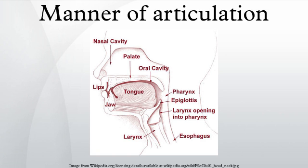Fricative, sometimes called spirant: where there is continuous frication at the place of articulation. Examples include English /f, s/, /v, z/, etc. Most languages have fricatives, though many have only one. However, the indigenous Australian languages are almost completely devoid of fricatives of any kind. Sibilants are a type of fricative where the airflow is guided by a groove in the tongue toward the teeth, creating a high-pitched and very distinctive sound. These are by far the most common fricatives. Fricatives at coronal places of articulation are usually, though not always, sibilants. English sibilants include /s/ and /ʃ/.